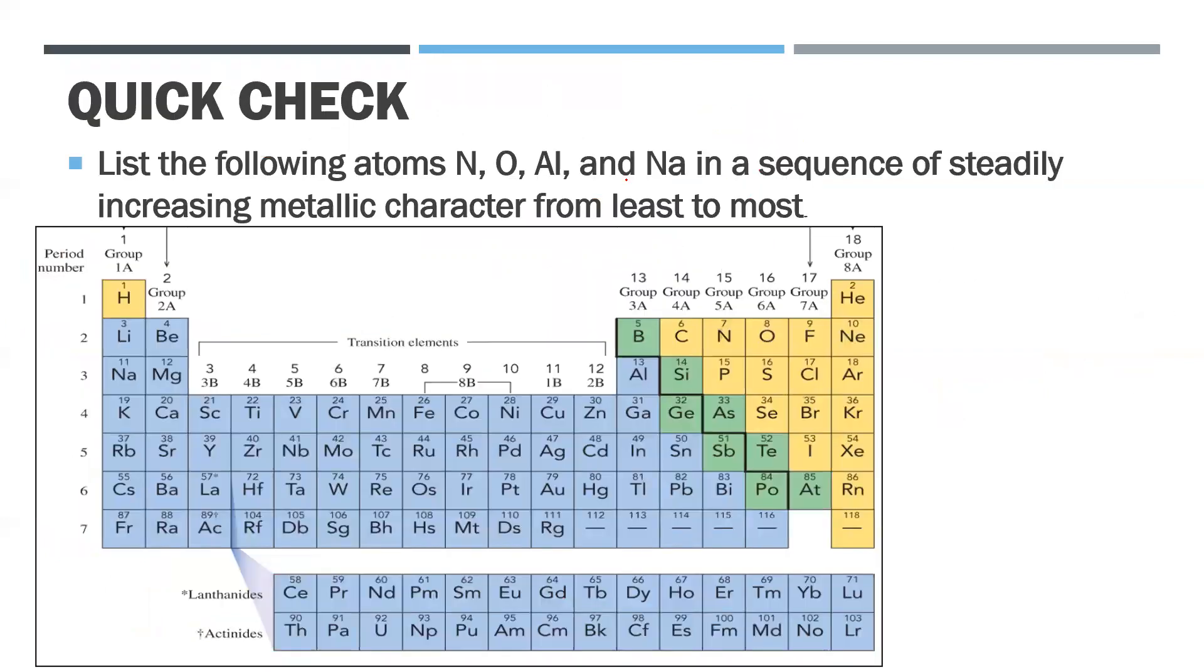So if I use this concept, the lower left hand corner are good metals - they're big, they want to lose electrons because they have low ionization energy. And the upper right are good non-metals, or you can think of them as poor metals.